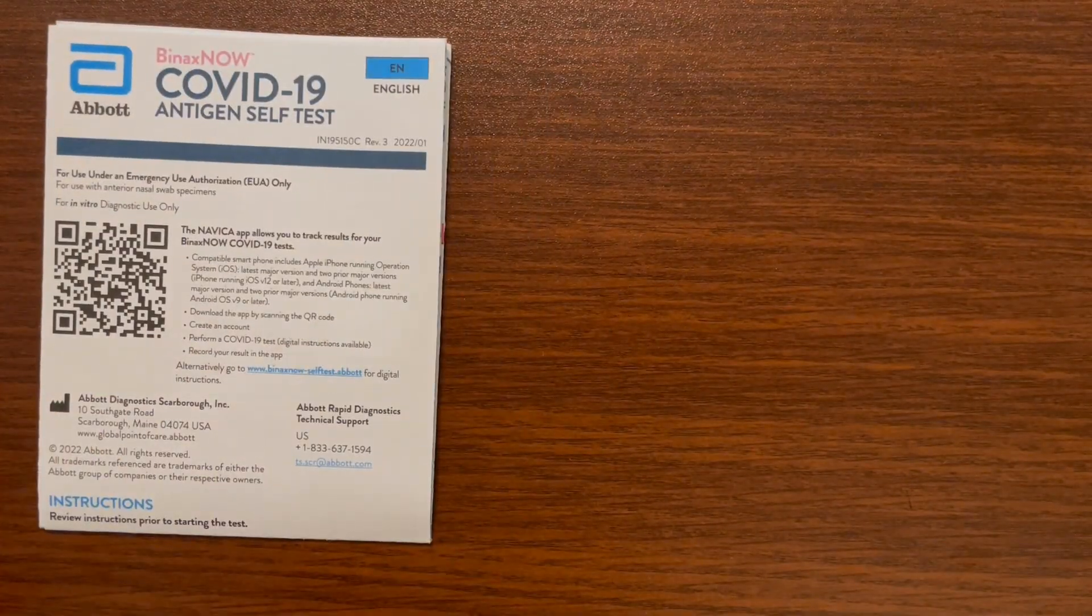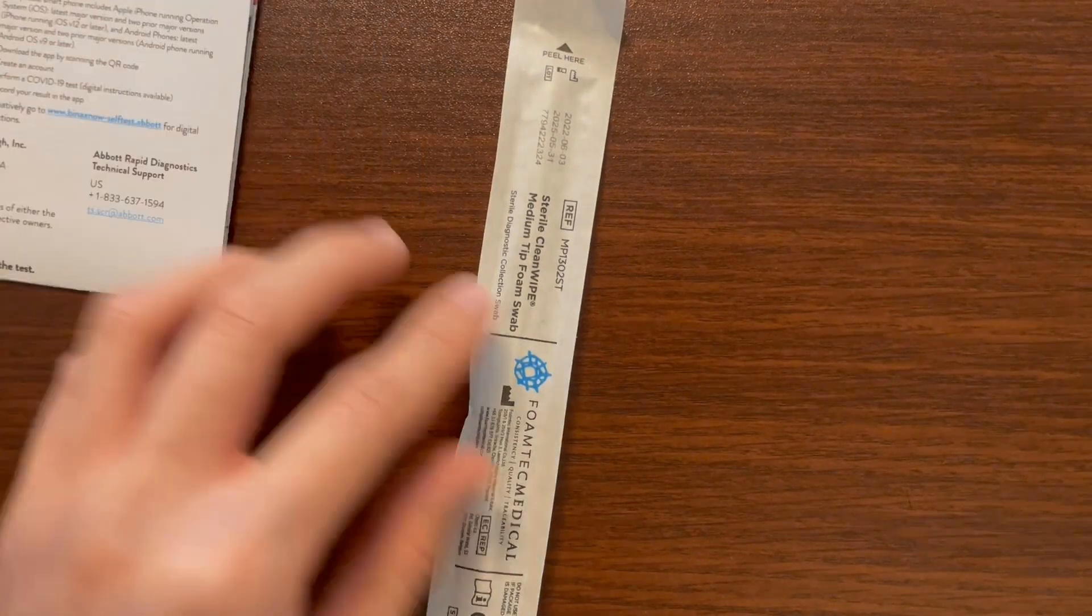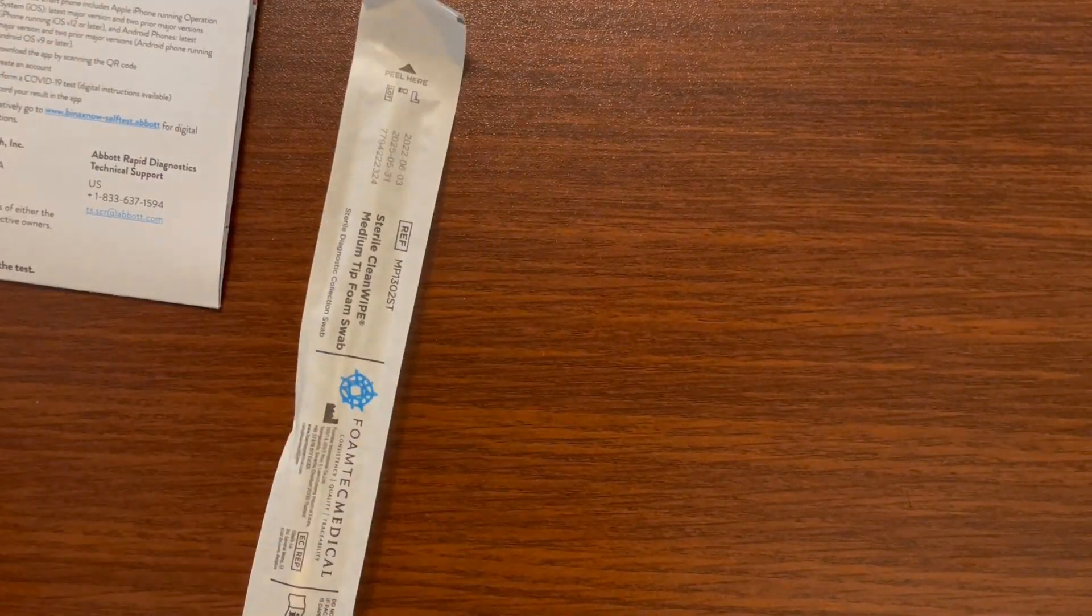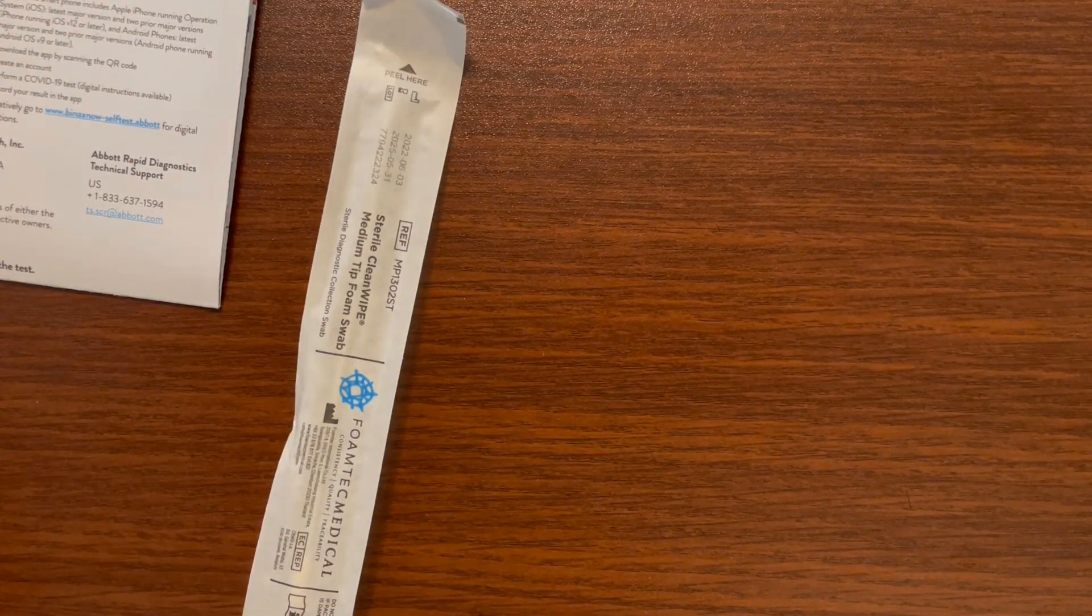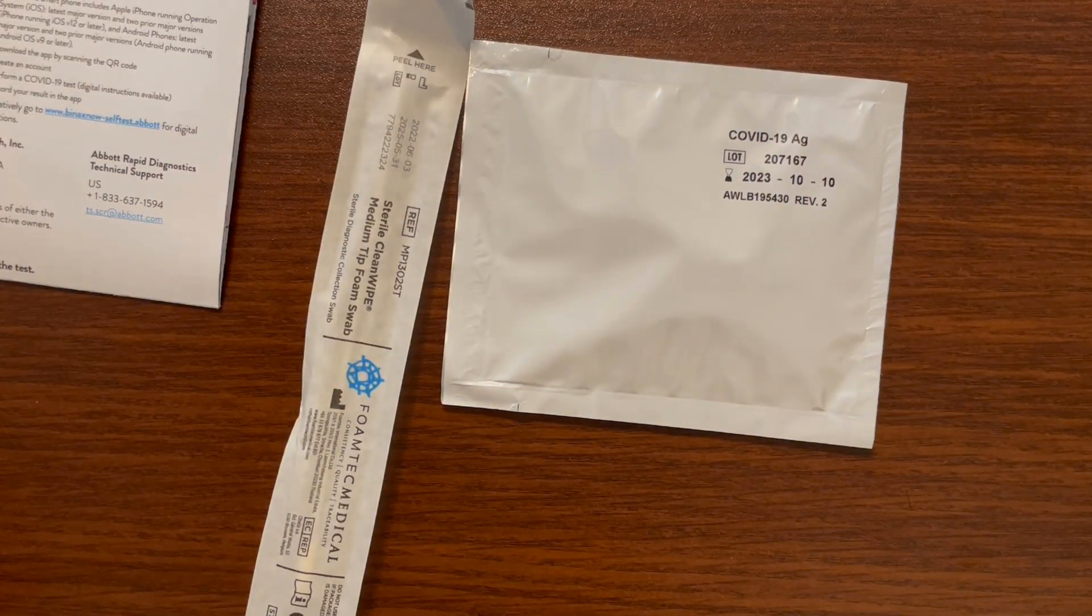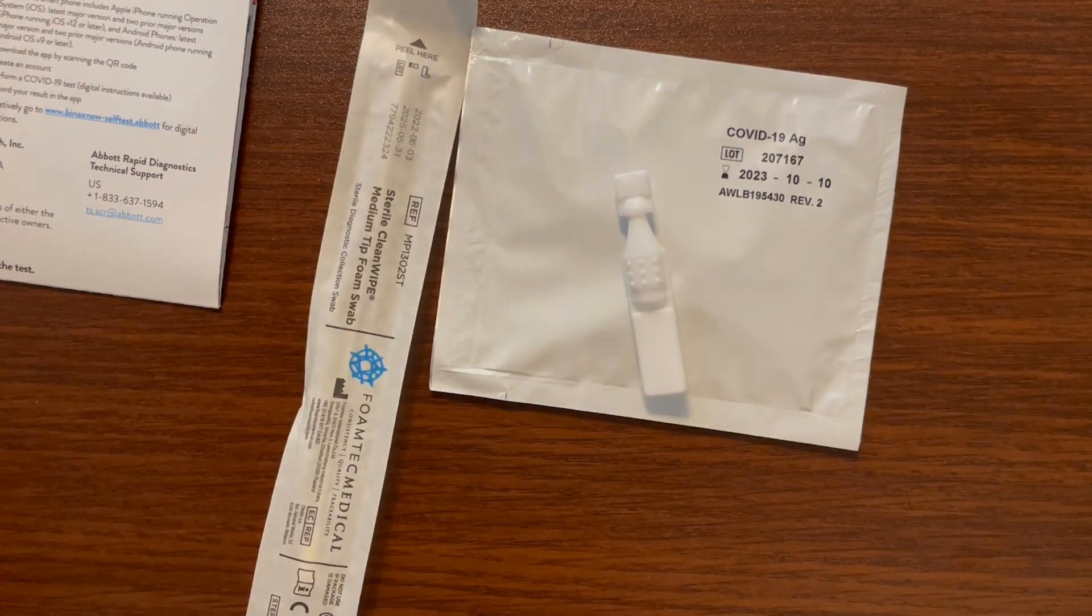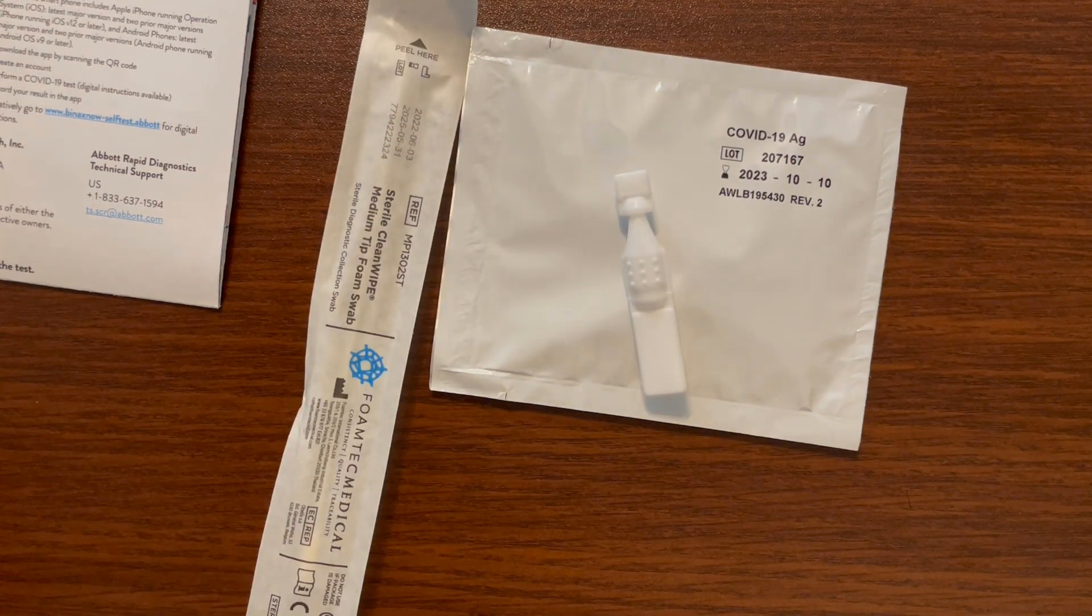You should find a few things inside the box including the instructions, and what you'll need for the actual test is going to be one of these swabs. You will also need to take out a test pouch and then one of these dropper bottles, and that should be it.